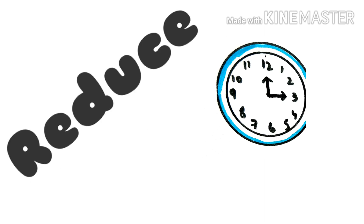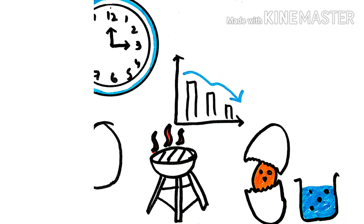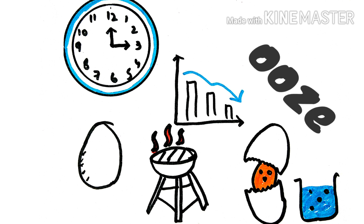But how can we reduce this cooking time? The cooking time is reduced if the egg is placed directly in boiling water. But then the egg shell cracks open, allowing egg material to ooze into the water.